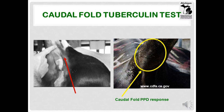Most cattle that respond on the CFT do not have bovine TB. This slide shows two cows that responded to PPD. On the left is a dairy cow with a very small bump where the PPD was injected, and on the right is a beef cow with a large visible response to PPD. Both animals responded to the PPD and require further testing.